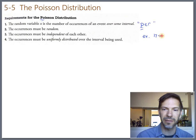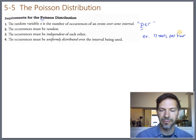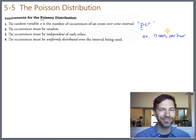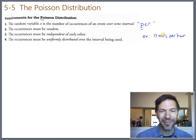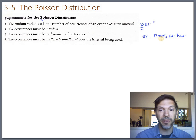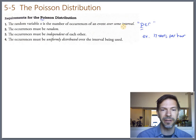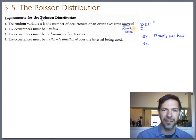Per starts with P and so does Poisson. So you can say Poisson is the per distribution. You need something like a number of occurrences of an event over some interval, like I get 17 texts per hour. That's a per, right? That's a number of occurrences of an event over an interval. The interval here is hours. So 17 texts per hour. Usually the interval we're talking about is a time interval.